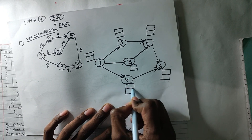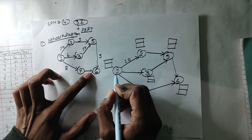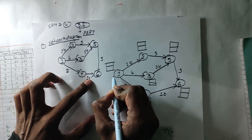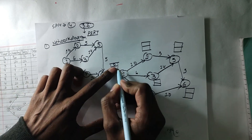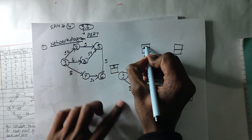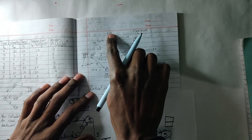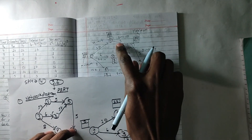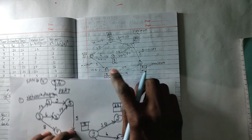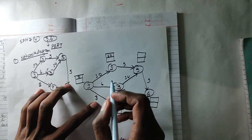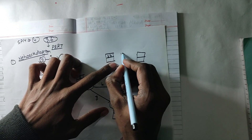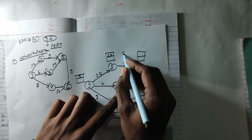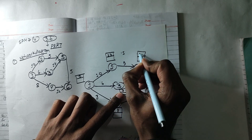Starting from node 1: after node 1, add 10 — that gives 10. From 0, add 6 — that gives 6. Add 8 — that gives 8. So the values are 10, 6, 8. After that, add 5 to 10 — that gives 15. Add 4 to 6 — that gives 20. Maximum of 15 and 20 is 20. So here it is 20.